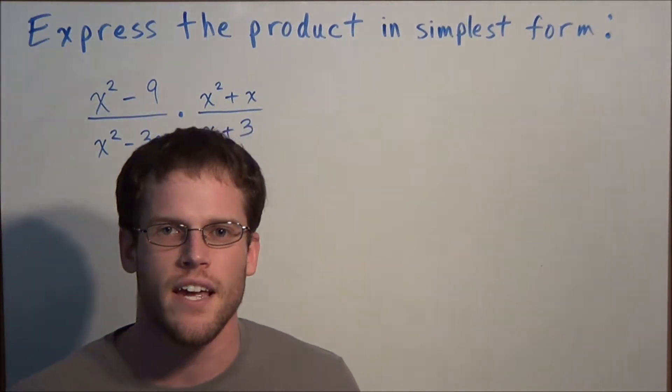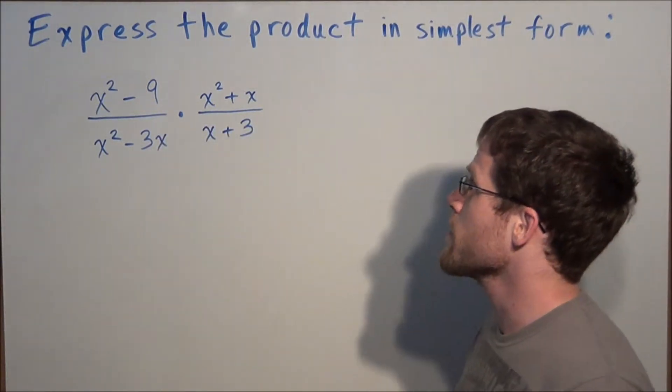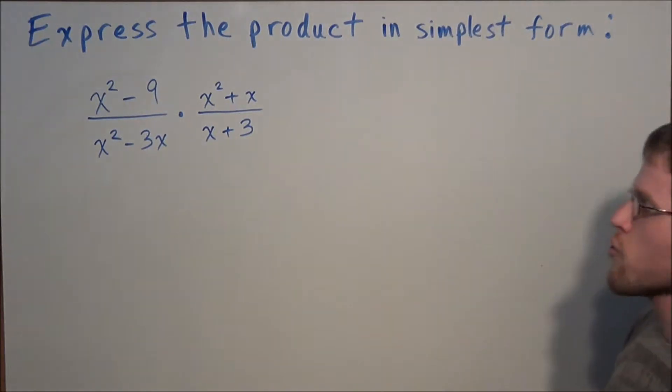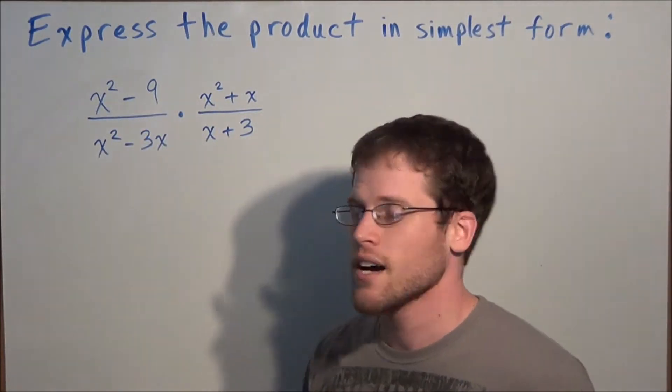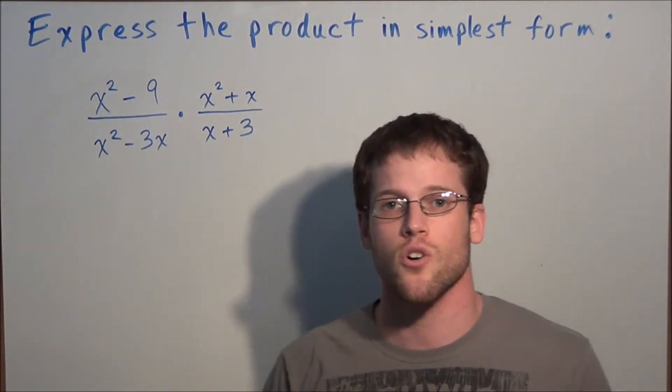Hi, my name is Mr. D, and today I want to take a look at multiplying rational expressions. We have to express the product in simplest form: x squared minus 9 over x squared minus 3x times x squared plus x over x plus 3.